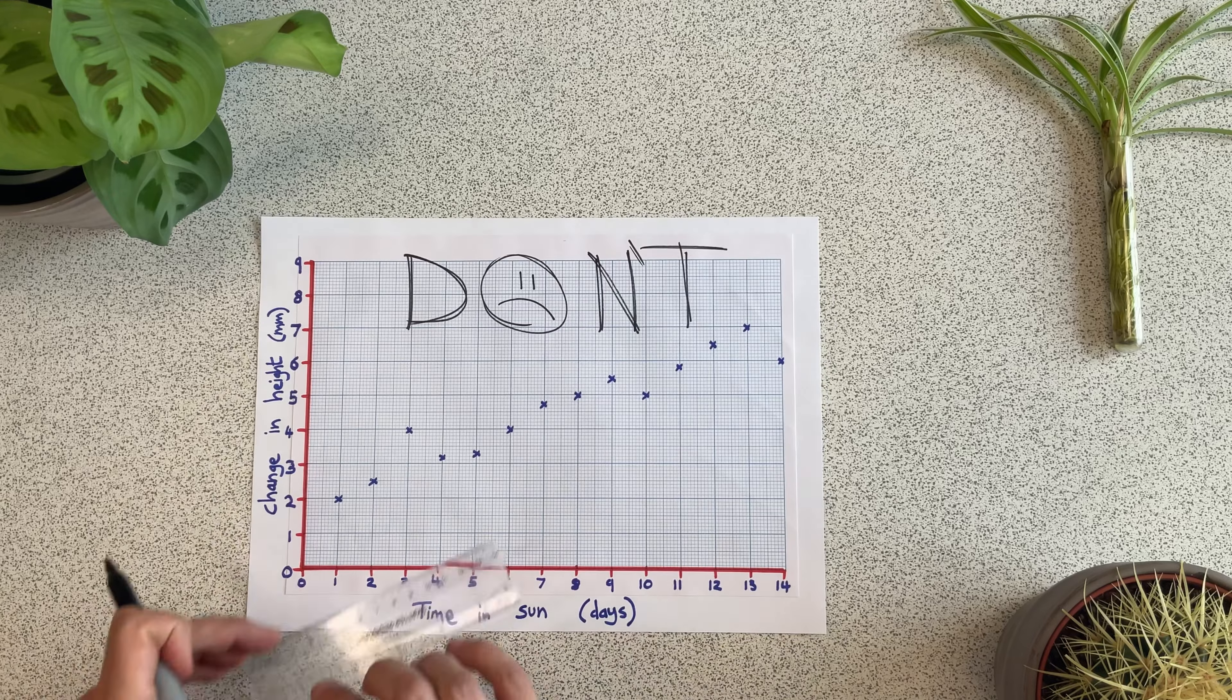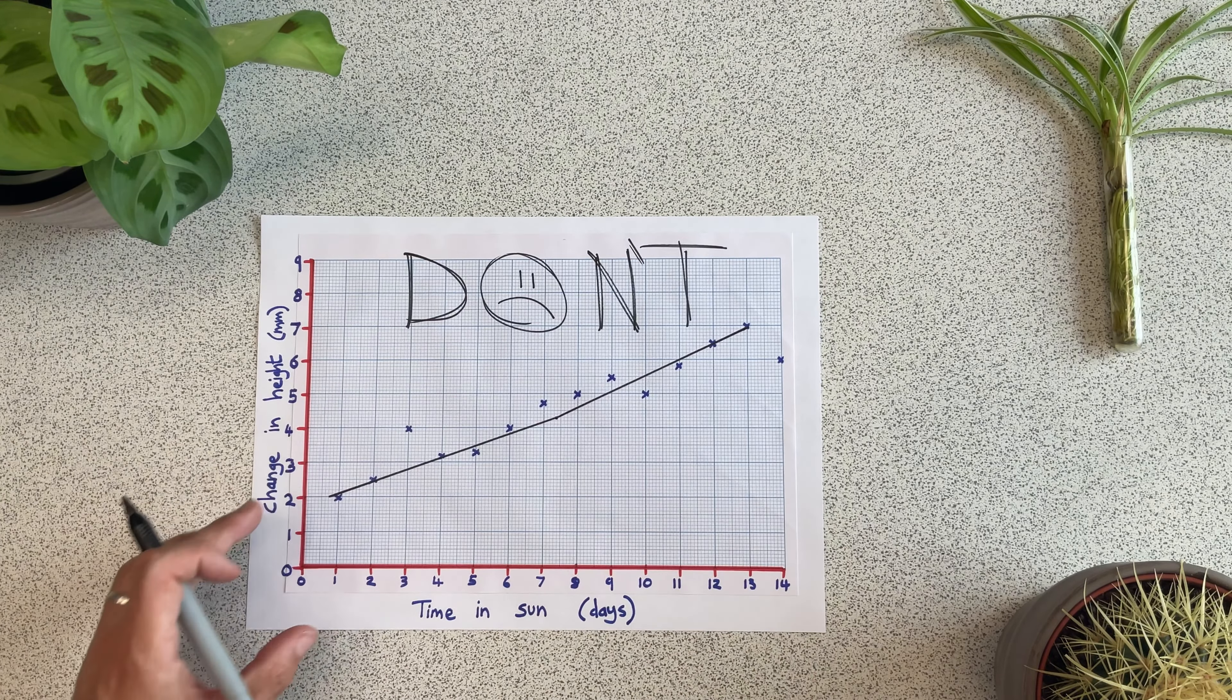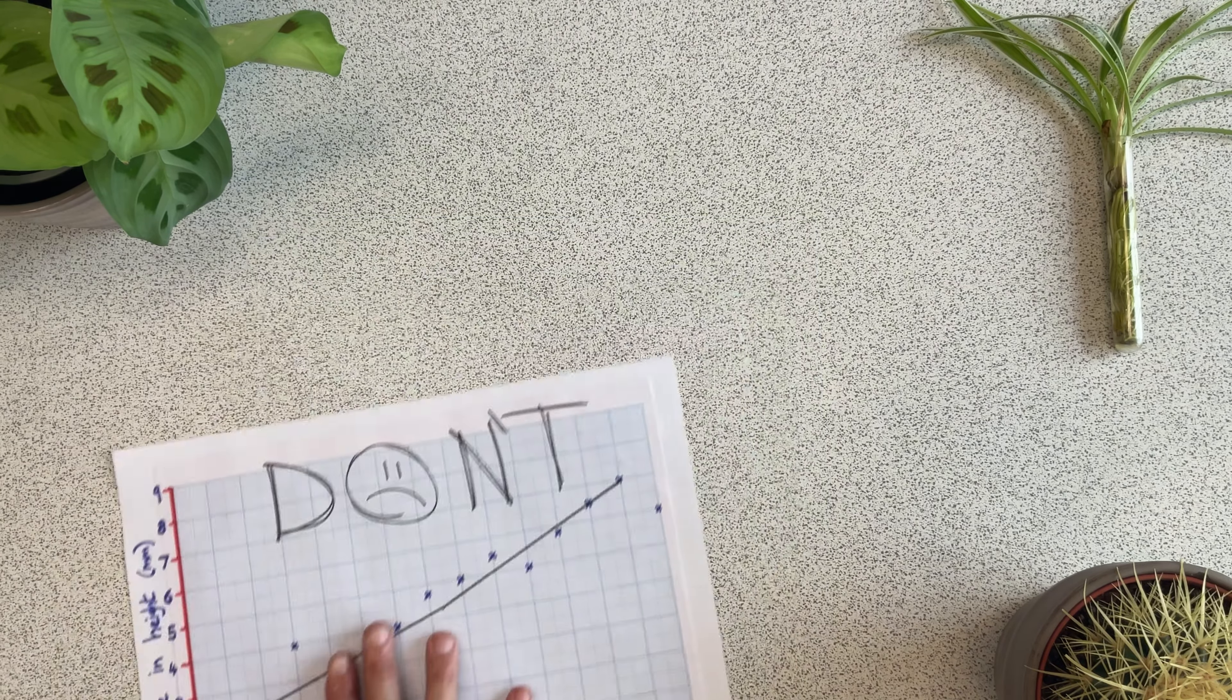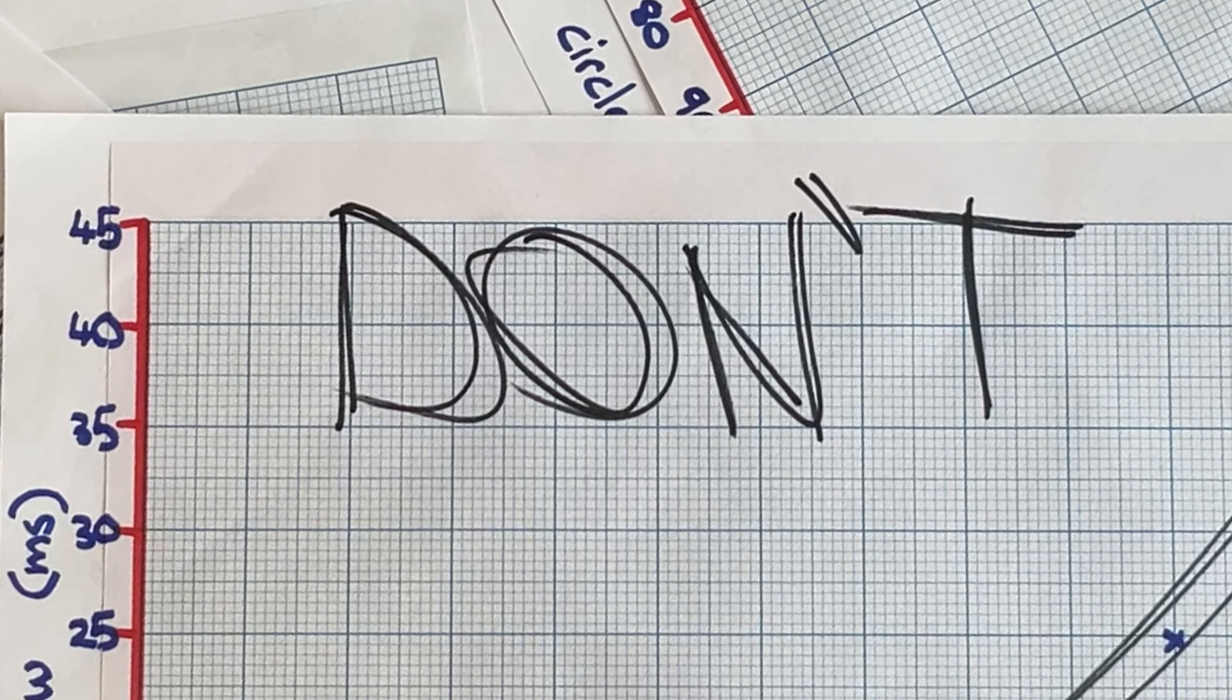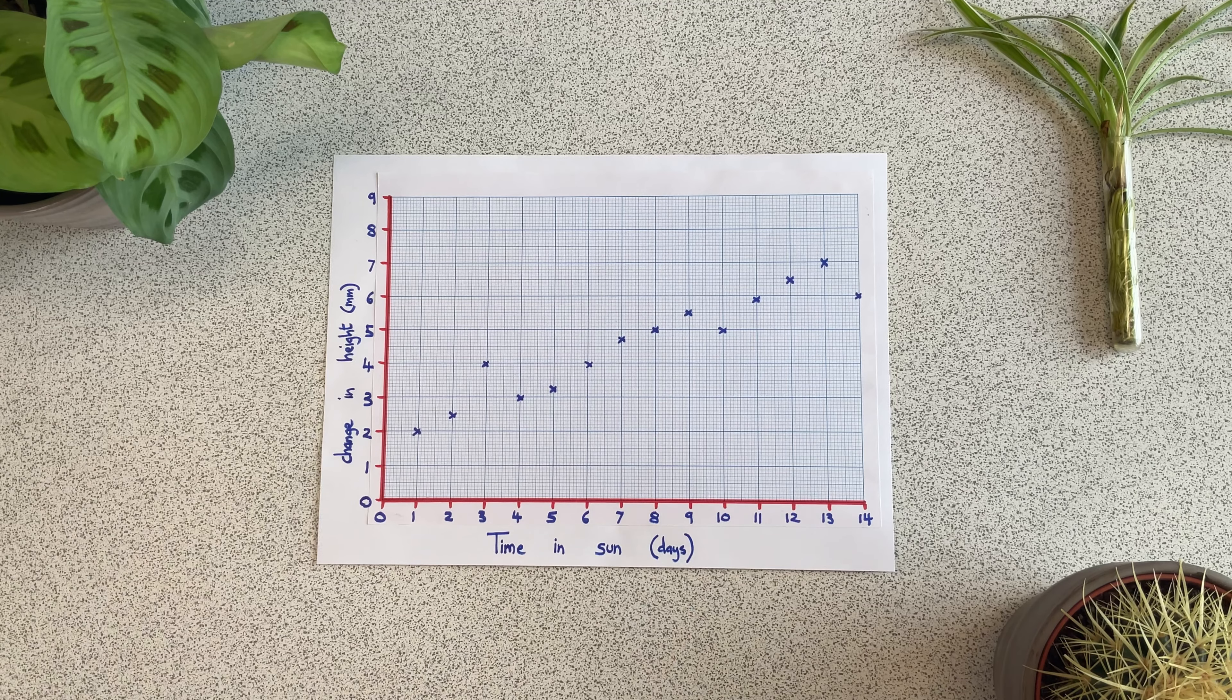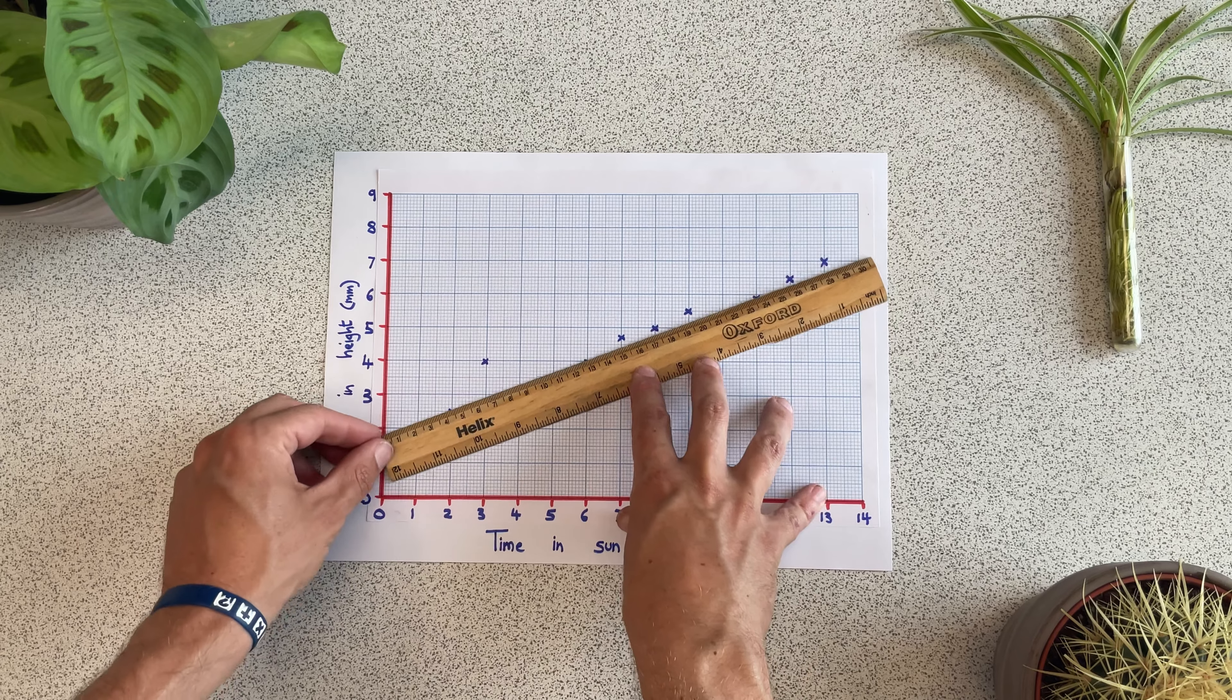The second mistake is you can accidentally end up changing direction. This wouldn't happen if you used a long ruler. To avoid this confusion, you need a single line. Now you know the mistakes to avoid, let's look at how to draw a line of best fit correctly. What you do is you place your ruler on the page and move it around until you've found the best spot.